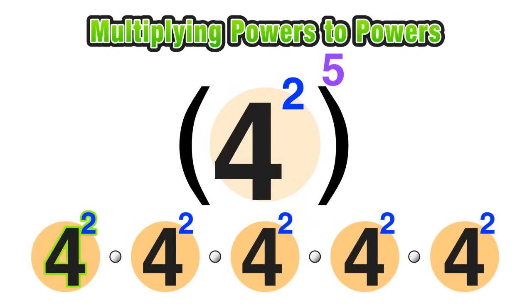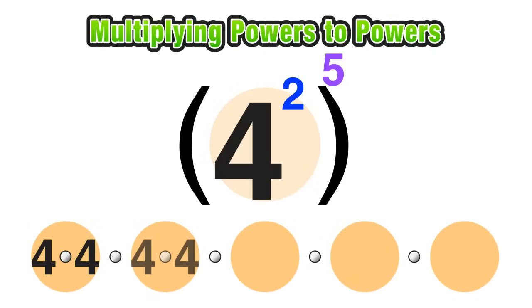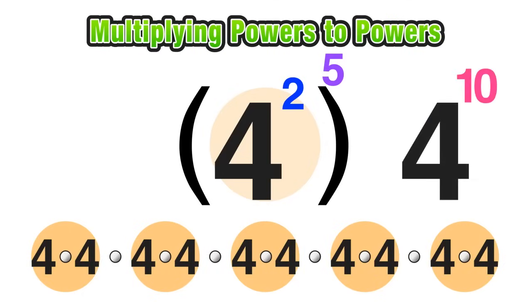Now to push this a little bit further, I know that four squared can be rewritten as four times four. And I can rewrite the rest of the four squareds in the same way. So I would replace each four squared with four times four. And now I have one long expression with one, two, three, four, five, six, seven, eight, nine, ten fours being multiplied together. So this is equal to four to the tenth power.